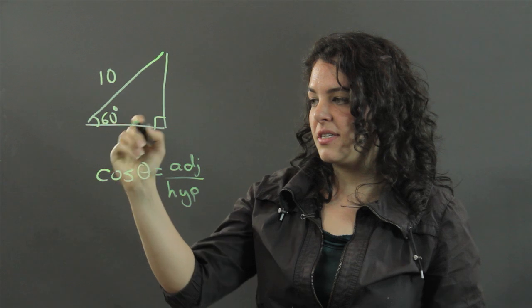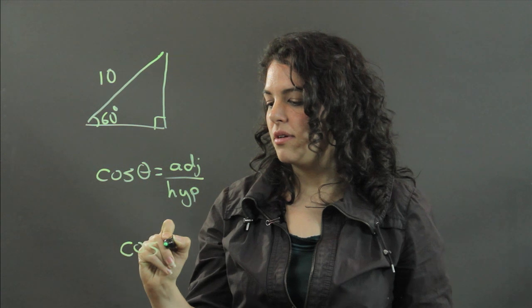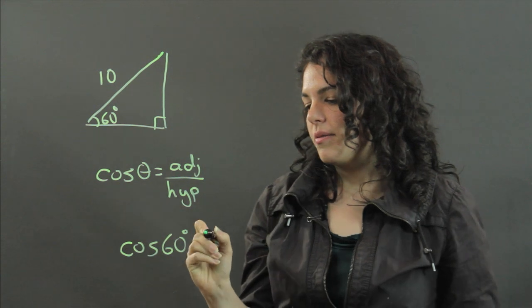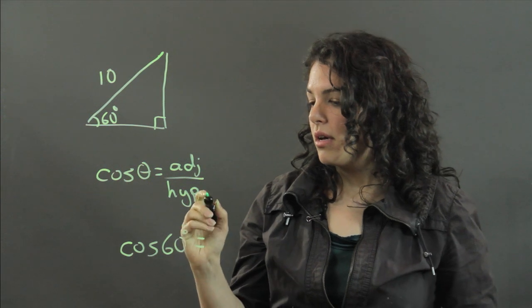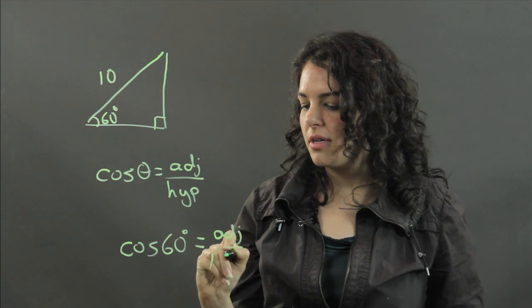Therefore, the cosine of this 60 degree angle, cosine of 60 degrees here, can be determined as the adjacent over 10.